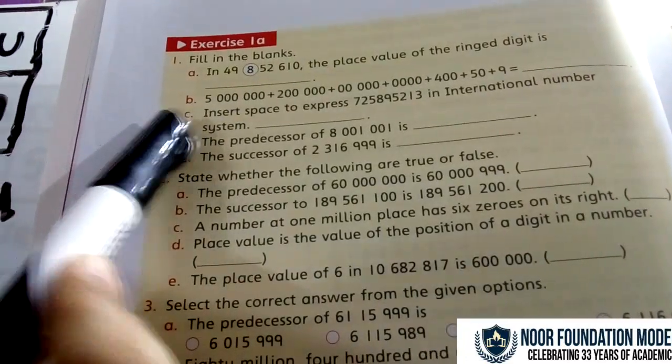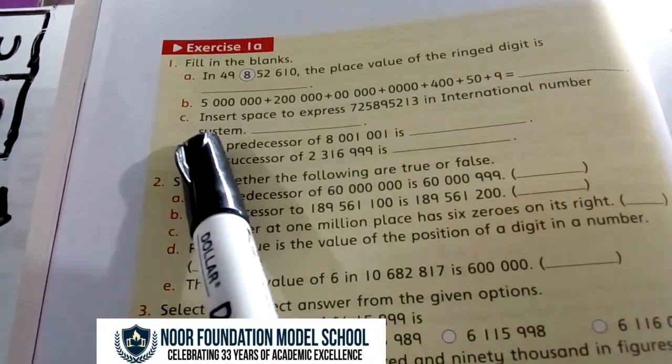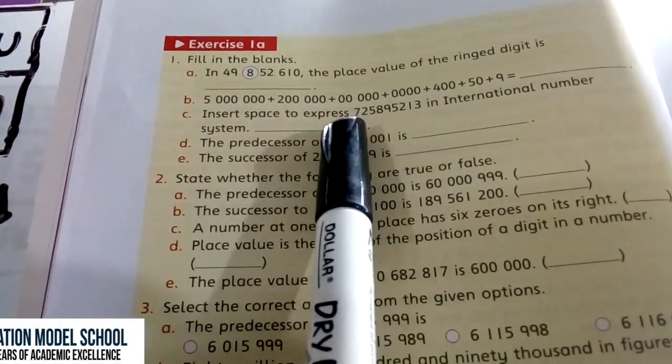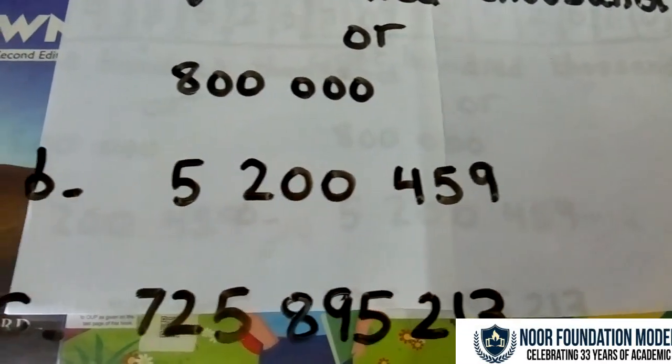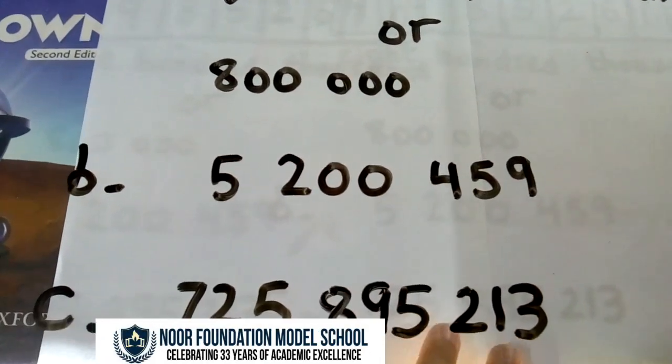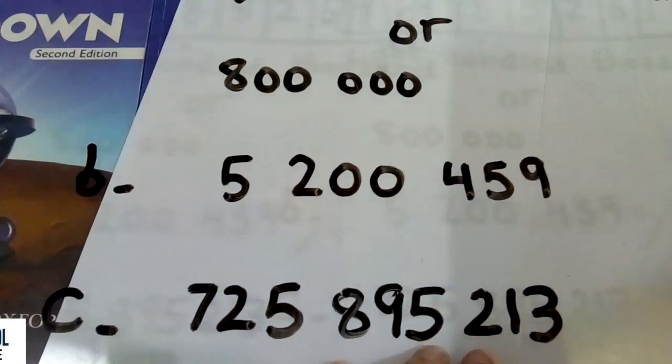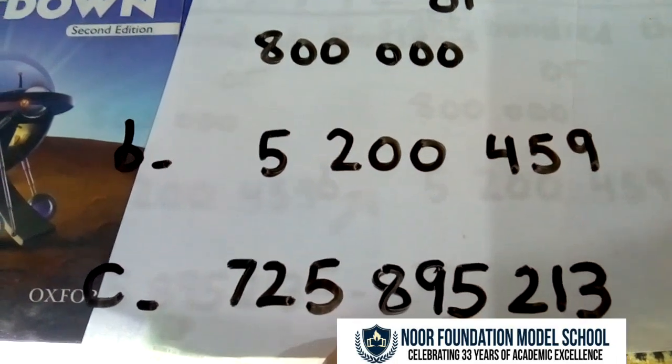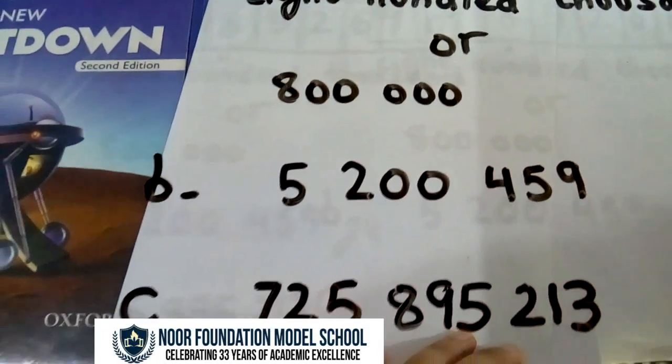Now, we come to Part C. Insert space to express this number in international number system. So, this is the answer. See, as I have told you before, after every three digits in the international system, we give some space or comma. So, after unit, ten, hundred, there is some space, and then thousand, ten thousand, hundred thousand, some space, and then million, ten million, and hundred million.